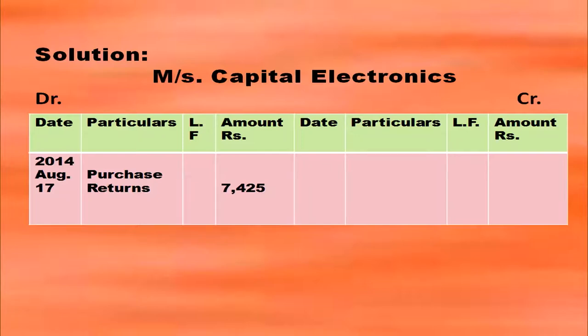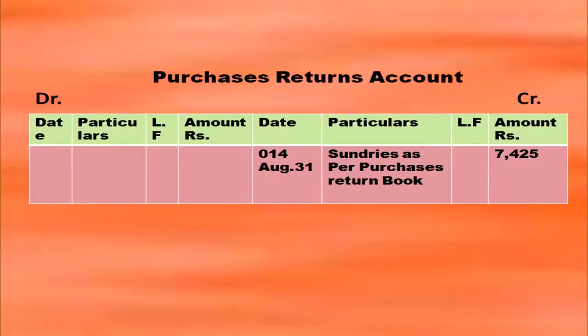On the debit side you will post purchase returns with the amount and date in the respective columns. Always purchases will have debit balance, so purchases returns will have credit balance. Sales will have credit balance and sales returns will have debit balance. These are the basic things, so if you keep this in mind you can easily post entries correctly. Then you have to open purchases returns account and on the credit side you will post by sundries as per purchases returns book, with date and amount in the respective columns.